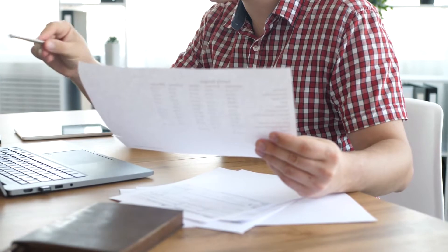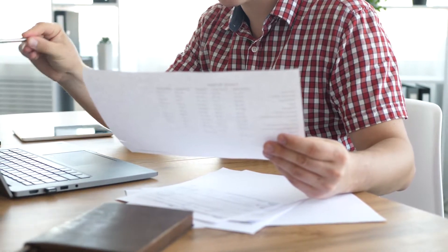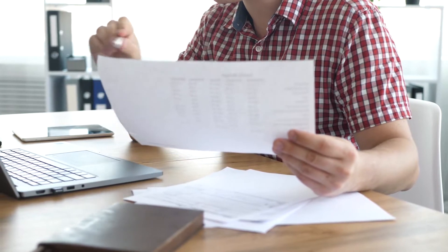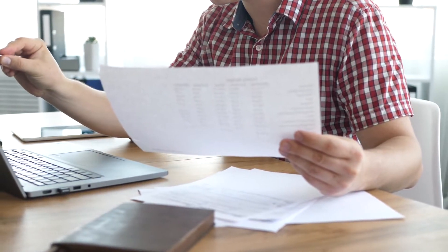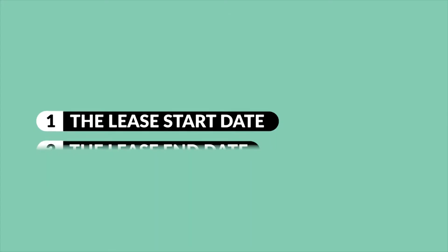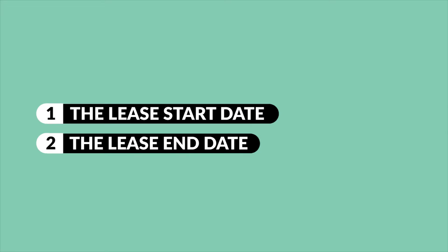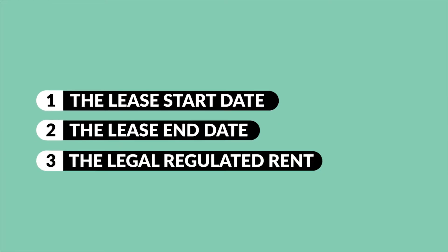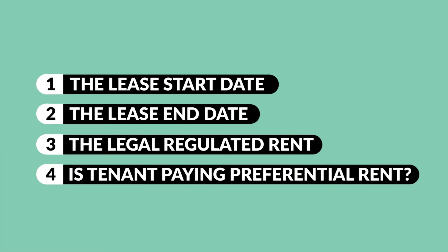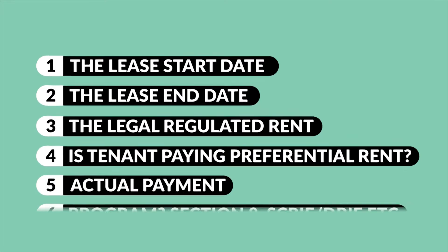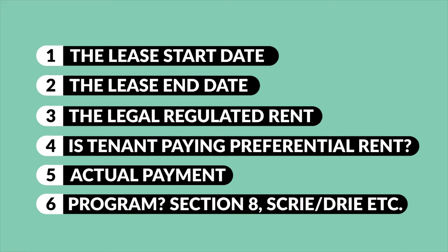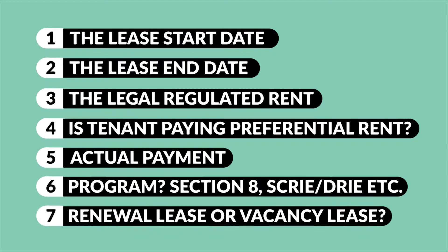Whenever you prepare a vacancy lease or renew a tenant's lease, record all the following information so you have it ready when annual registration time rolls around. Keep records for each apartment for the following: number one, the lease start date; number two, the lease end date; number three, the legal regulated rent; number four, if the tenant is paying a preferential rent, keep a record of that; number five, the actual payment; number six, if the tenant is in a program like Section 8, SCRIE, or DRE; and number seven, if it's a renewal lease or a vacancy lease.